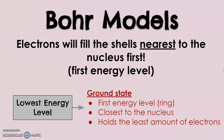We need to know how to draw these Bohr models. First, electrons will fill the shells nearest to the nucleus first. So when we figure out how many electrons we need, we have to start from the inside and make our way out — the inner rings get filled first. Our lowest energy level is the ground state, the first energy level, closest to the nucleus. It holds the least amount of electrons — only two can go in that first ring.